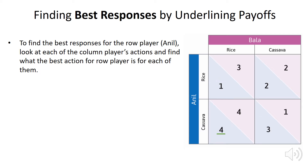If Bala plays cassava, we look at the payoffs and see that for Anil, when Bala plays cassava, he also prefers to play cassava. So you'll note that whatever strategy Bala plays — whether it's rice or cassava — Anil is going to choose cassava. This means Anil doesn't really care what Bala is going to do; he's just going to play cassava.